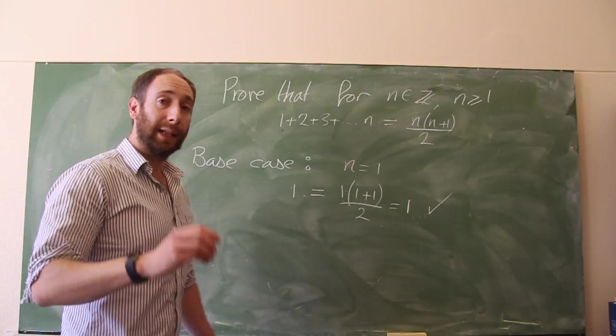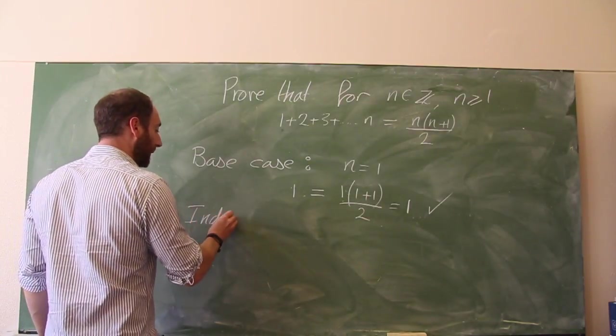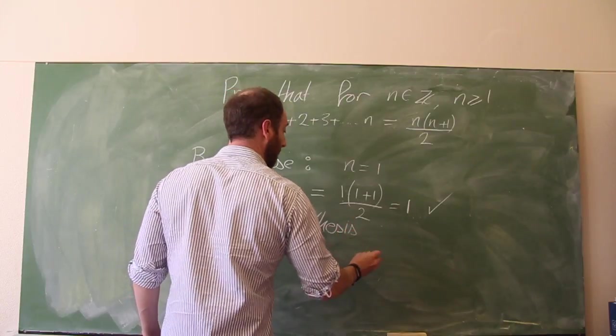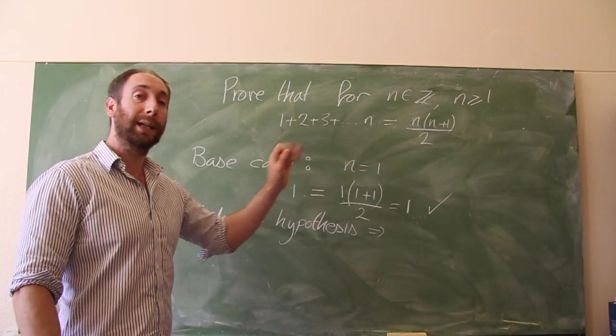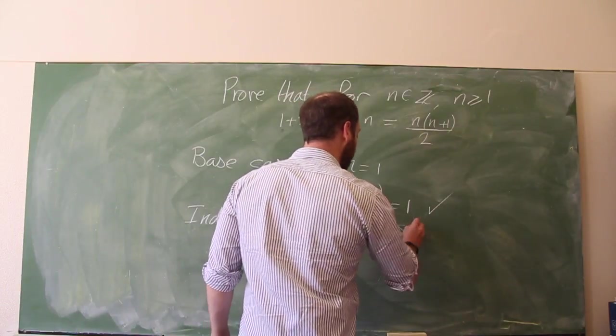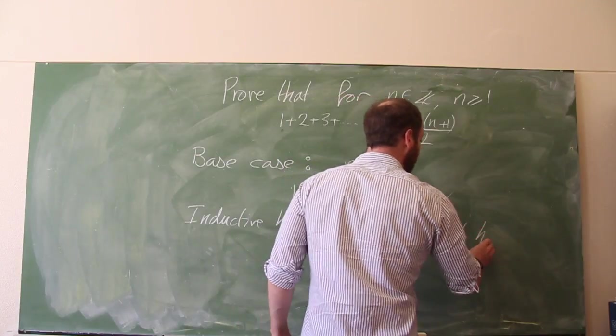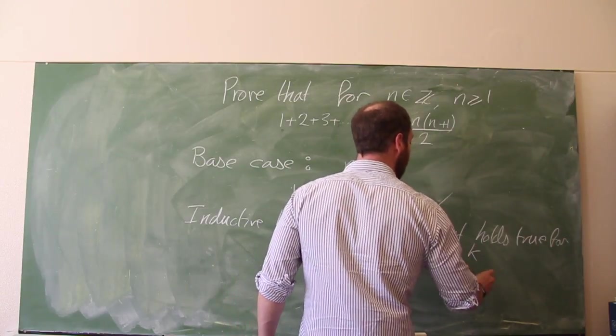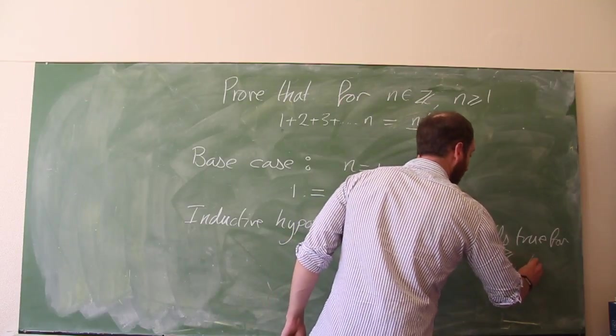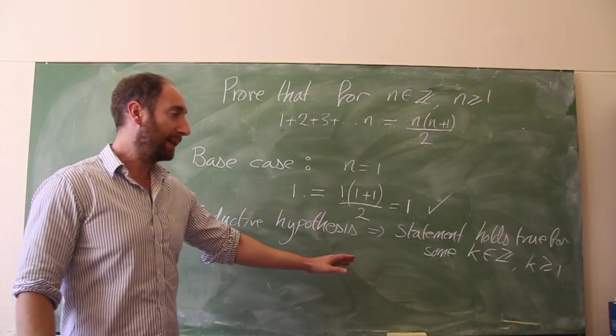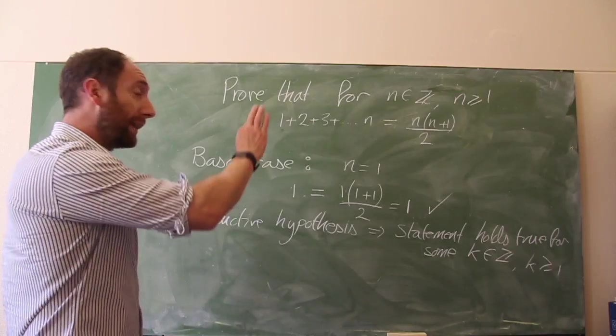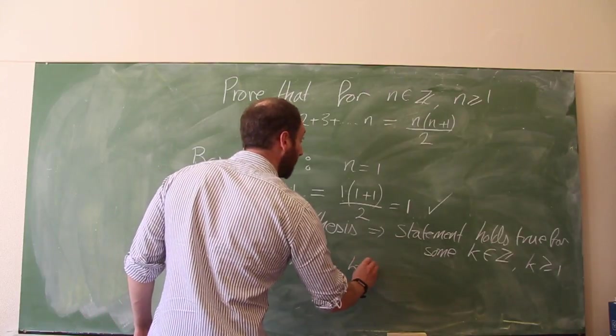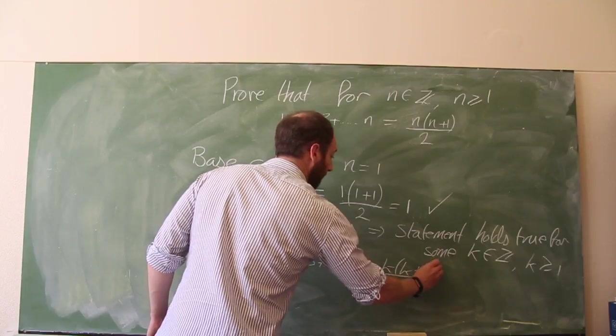What's the next thing? The next thing is always to write the inductive hypothesis. So we say the inductive hypothesis is that the statement holds true for some k greater than or equal to 1. We haven't said a specific k, and we haven't said for all k, that's very important. We've said for some k, and then we write it down. So that says that 1 plus 2 plus 3 plus 4 dot dot dot up to k equals k(k plus 1) over 2.